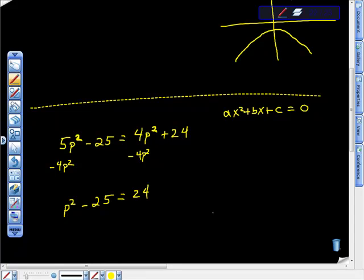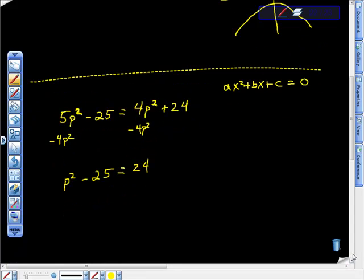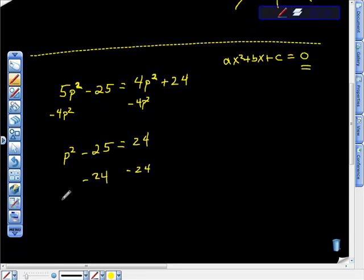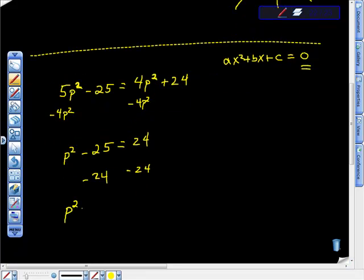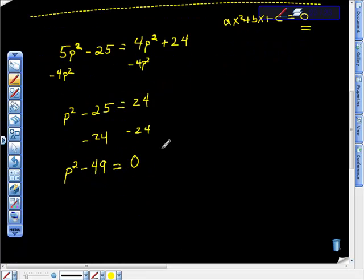And then I think what I will do is this: I want zero on the right hand side, so I'm going to add negative 24 here and negative 24 here. And we get p² - 49 = 0.